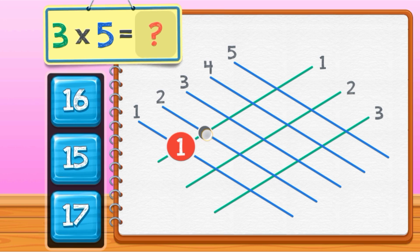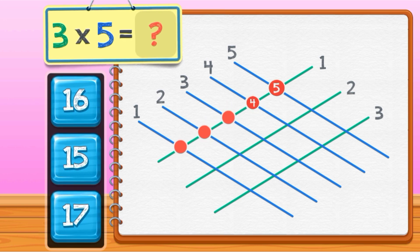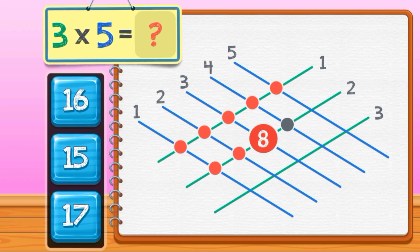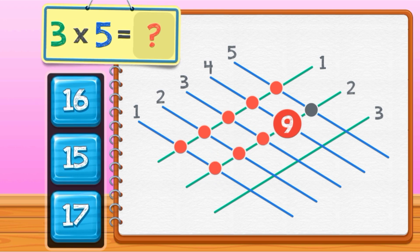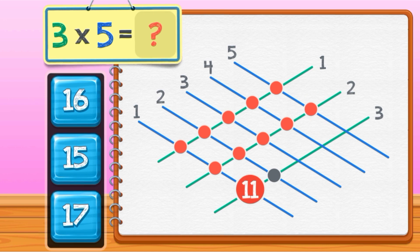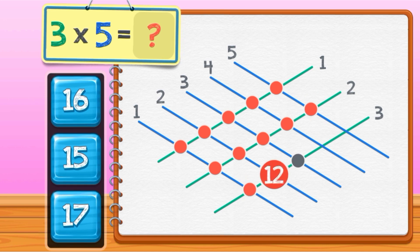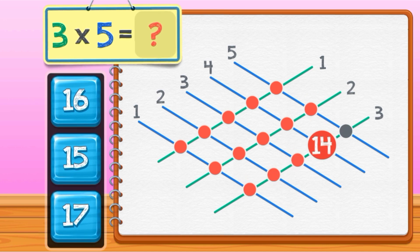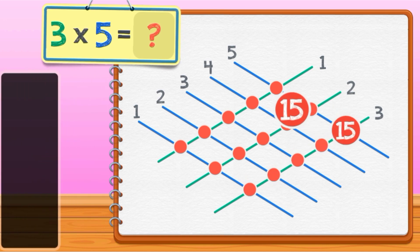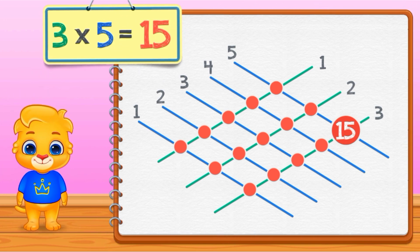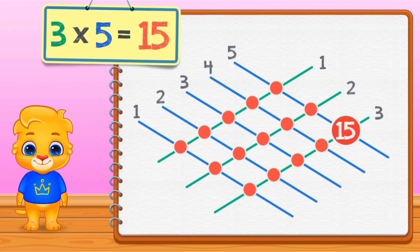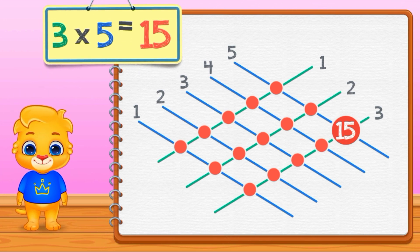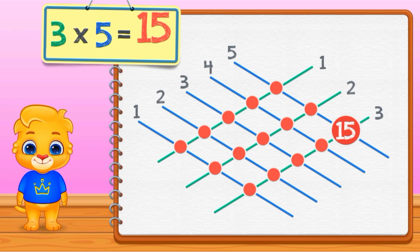1, 2, 3, 4, 5, 6, 7, 8, 9, 10, 11, 12, 13, 14, 15. 3 times 5 equals 15.